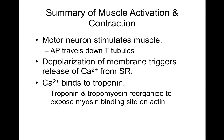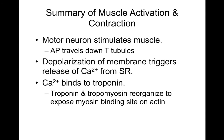To summarize: motor neurons stimulate the muscle; an action potential travels down the T-tubule; depolarization of the membrane triggers calcium release from the sarcoplasmic reticulum; calcium binds to the troponin; troponin and tropomyosin reorganize to expose the myosin binding site on the actin; and then contraction occurs. The breakdown of ATP allows the myosin head to attach and detach from the actin, creating a cross-bridge cycle.